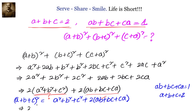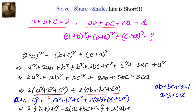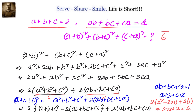So going back to our earlier step, the expression is 2 into [(a+b+c)² minus 2(ab plus bc plus ca)] plus 2(ab plus bc plus ca). Substituting the values: 2 into [2² minus 2 times 1] plus 2 times 1, which gives 2 into [4 minus 2] plus 2, which equals 2 into 2 plus 2, equals 6. So the answer is 6.